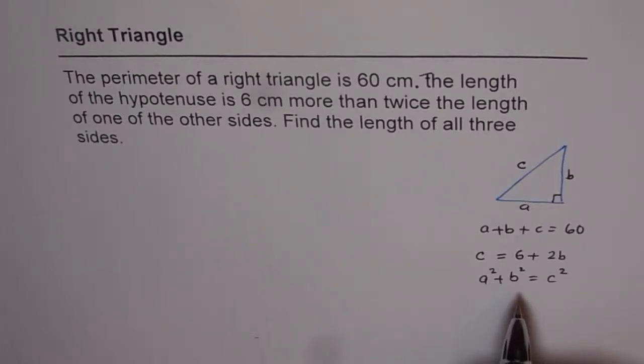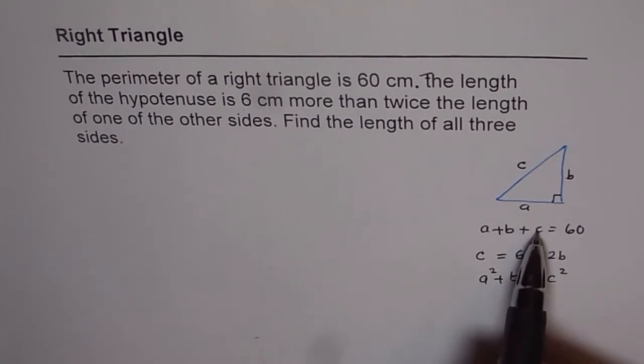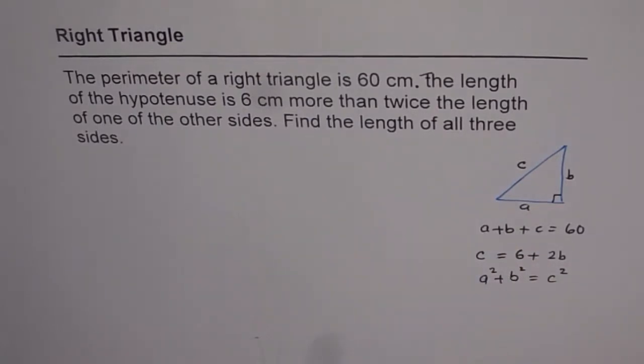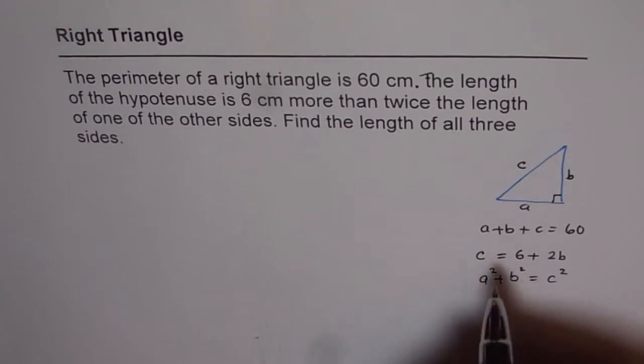Now how to relate them? We can substitute the value of c into the Pythagorean equation. We also have the equation a plus b plus c equals 60. We can place the c value there, so we get two equations with a and b and now it is easier to isolate and solve for all three variables. So that is the strategy we are working with. Let's start solving.